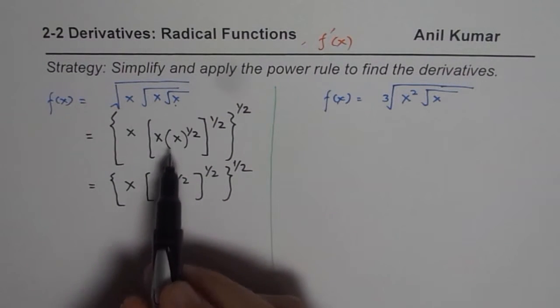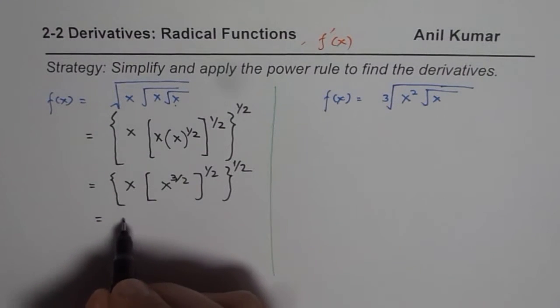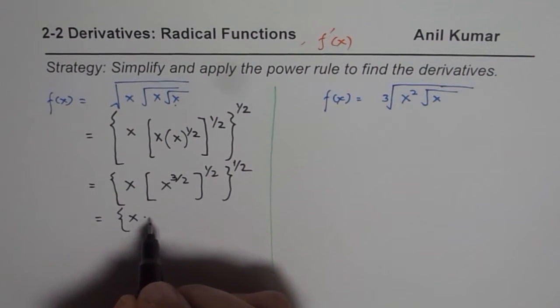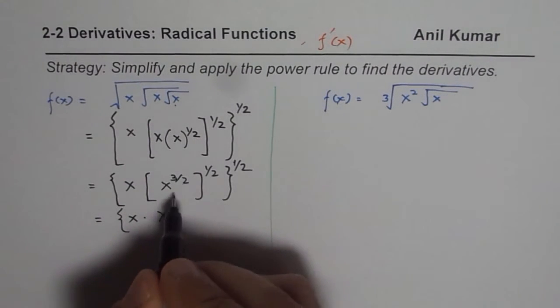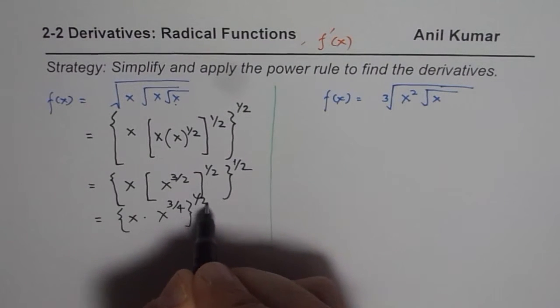Now we can apply the same strategy. We are working with exponents. So we get x now within square root. When you multiply, you get times x to the power of 3 over 4. Everything to the power of half.